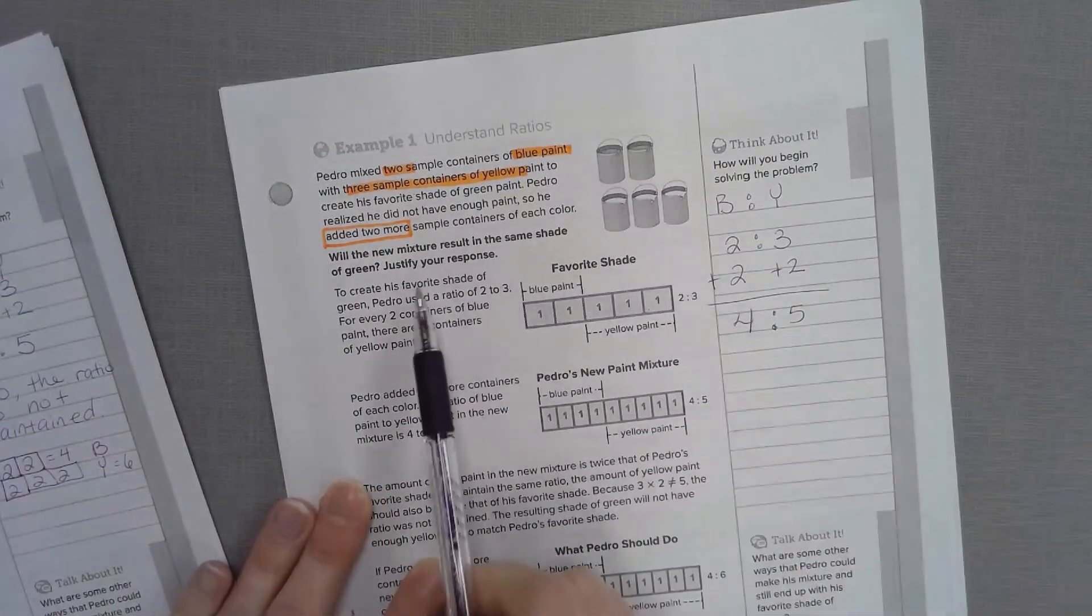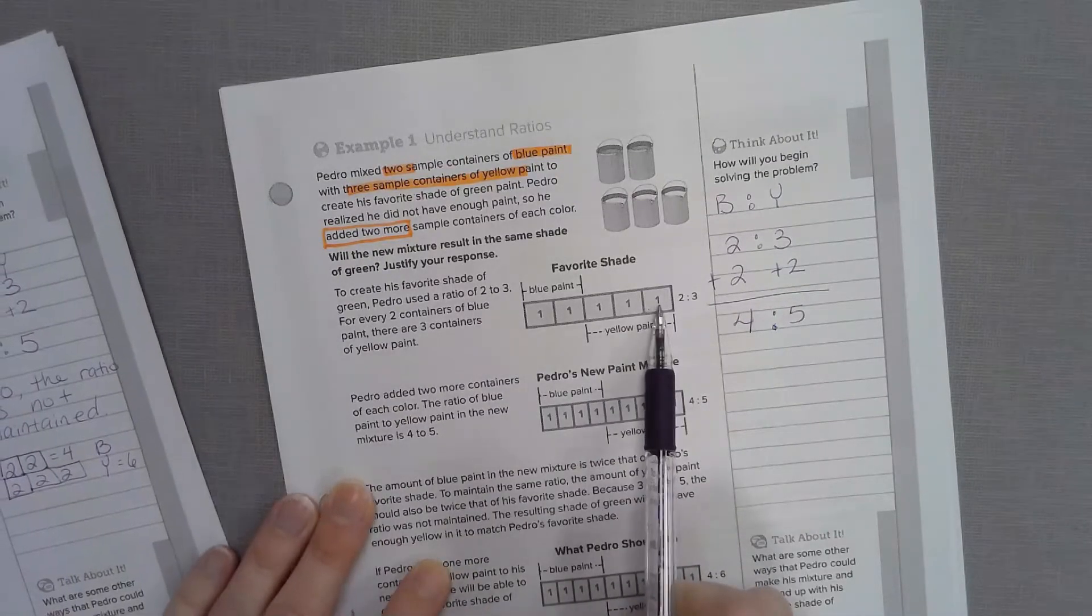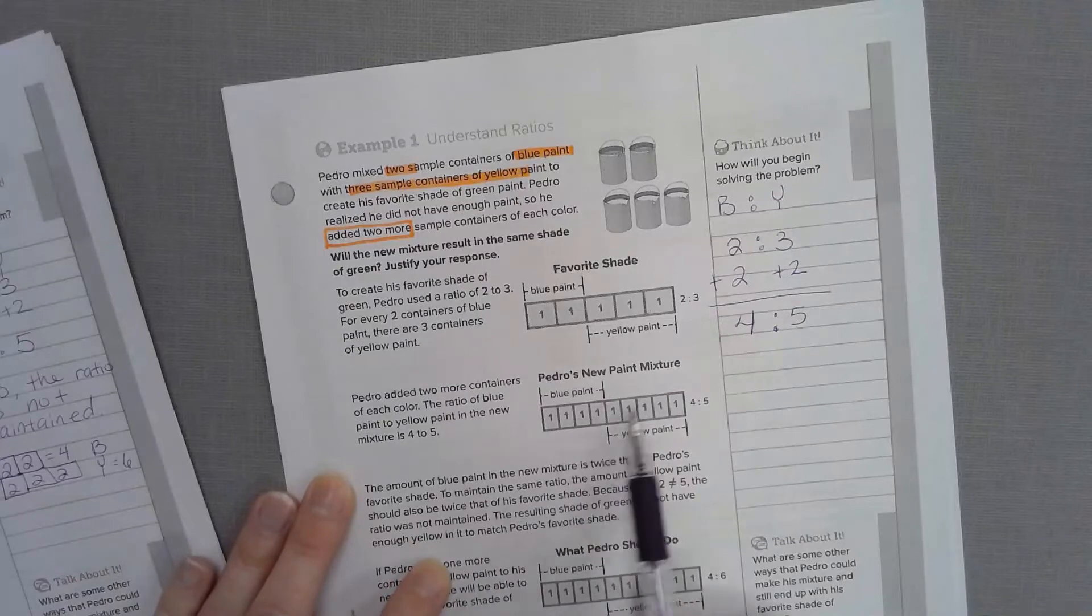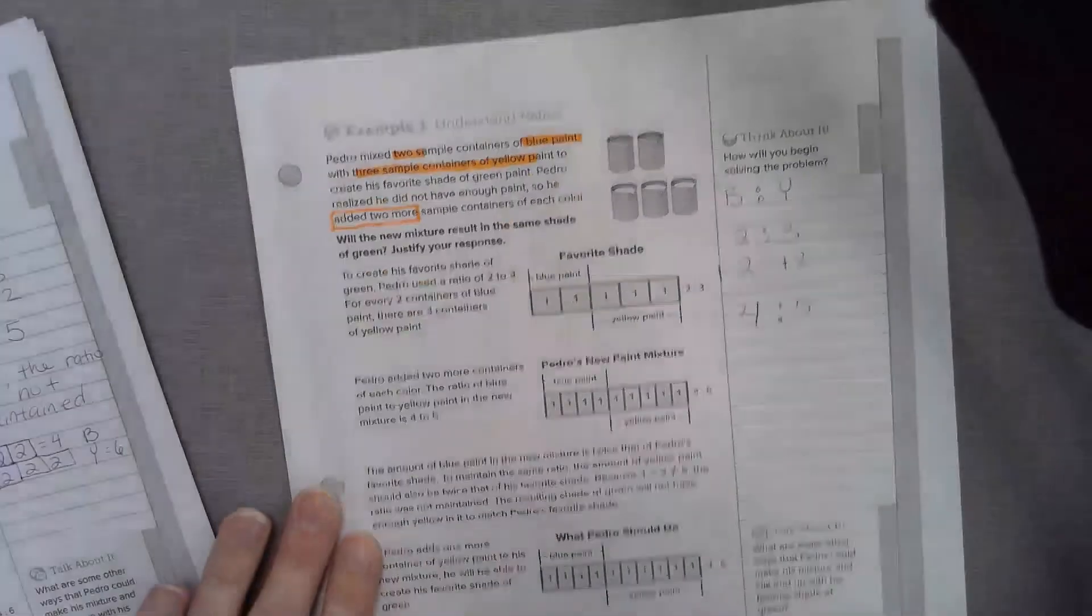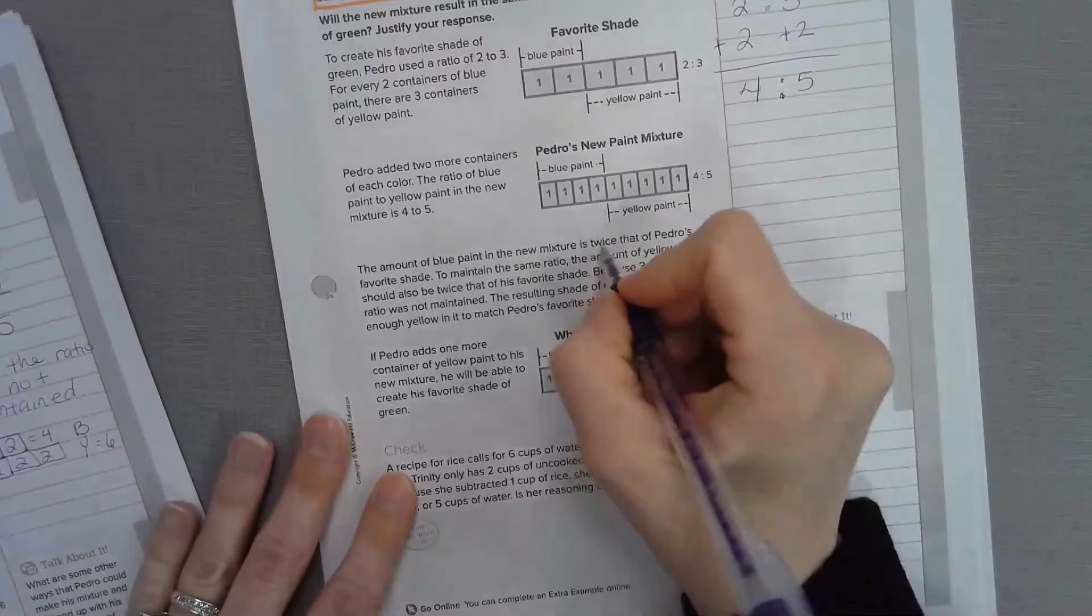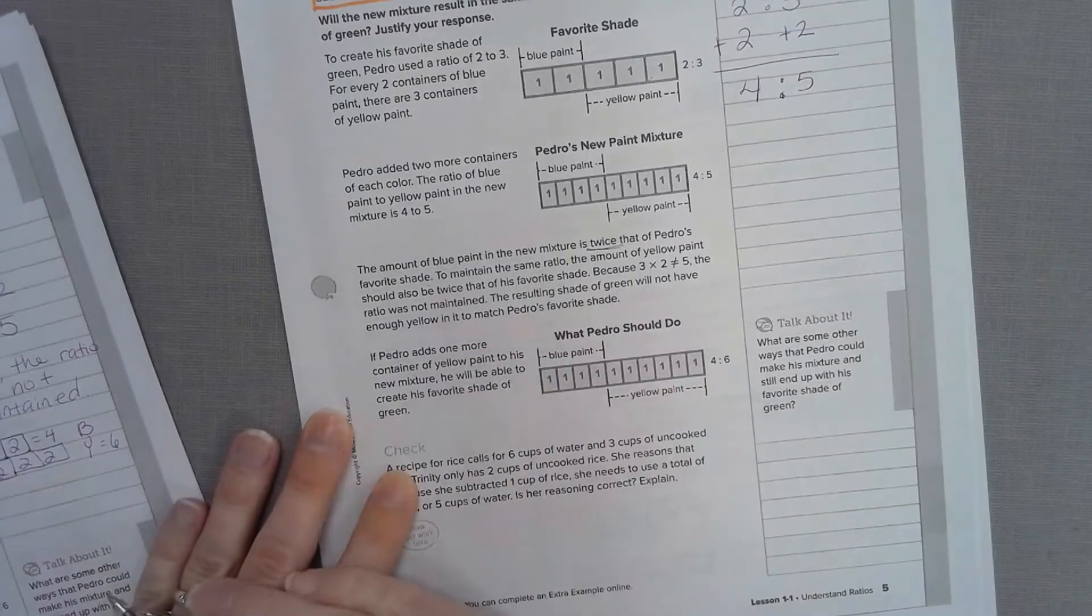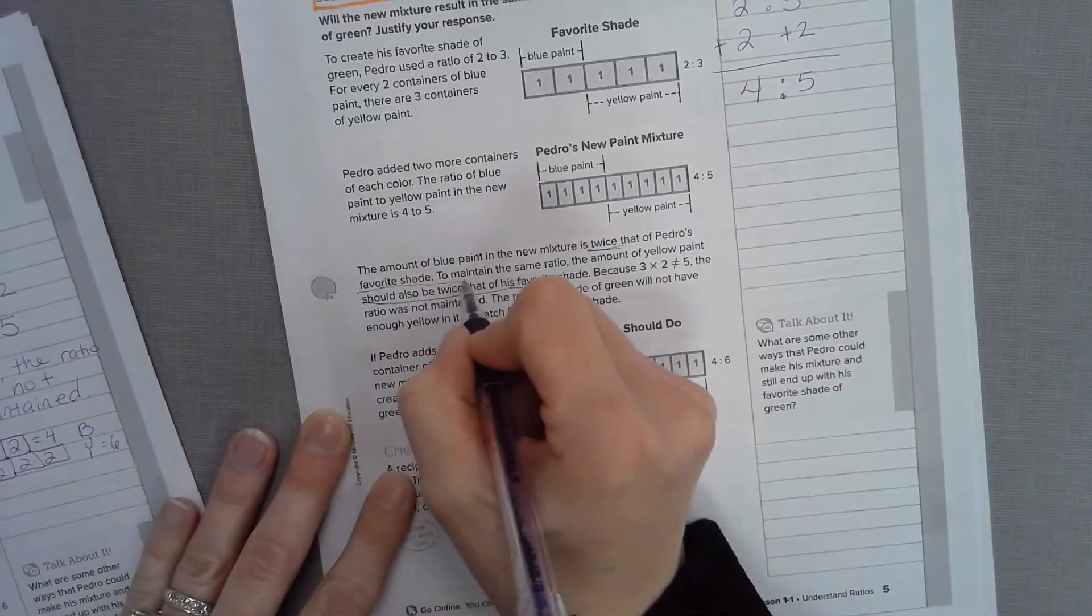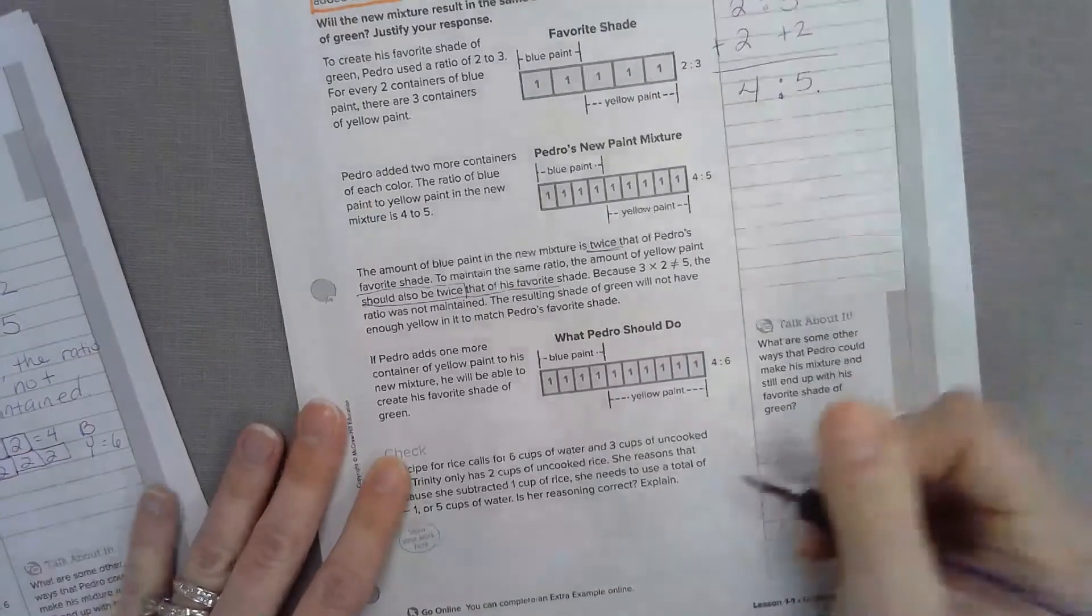So let's take a look at this diagram. To create his favorite shade of green, Pedro used a ratio of 2 to 3. Pedro added 2 more containers of each color, so it shows it here. There's 4 to 5, just like our ratio that we showed off to the side. The amount of blue paint in the new mixture is twice that of Pedro's favorite shade. To maintain the same ratio, the amount of yellow paint should also be twice the amount. Is 5 twice the amount of 3? The answer is no.